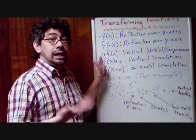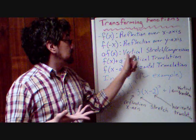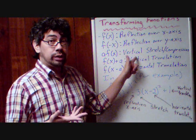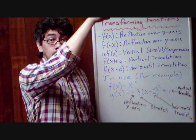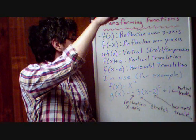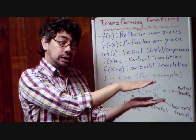When we multiply something in front of the function, we've got a vertical stretch or compression. It is a stretch when the number is bigger than one, and it is a compression when it's smaller than one.